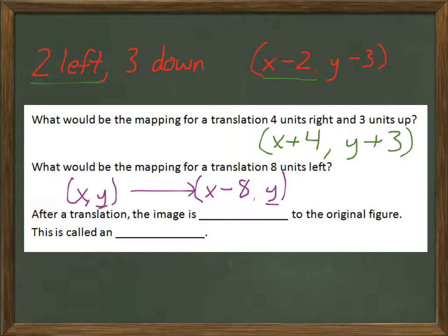That notation is just shorthand for XY changing to that. So Y here is staying Y there. Nothing is happening to Y. Whereas X here is changing into X minus eight. We're subtracting eight from X.